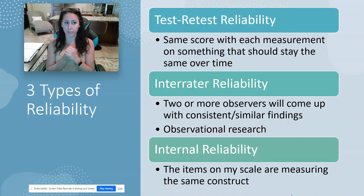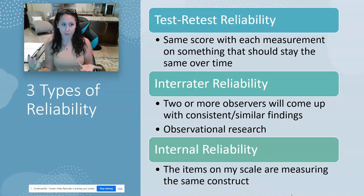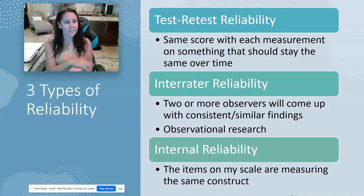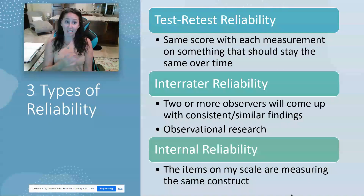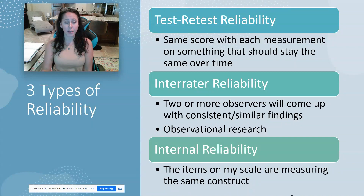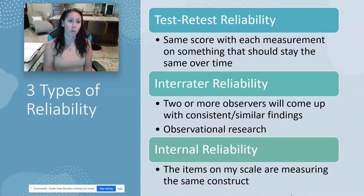Now if you had a job loss, a divorce, or some other huge life-upending circumstance, that's understandable. But in general, that would be something I'd expect to stay the same. So with test-retest reliability, if I expect it to stay the same over time, your score on my questionnaire should stay the same over time — and that's how I know I have that type of reliability in whatever questionnaire I'm giving you.